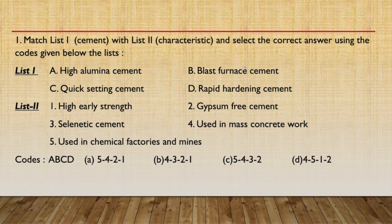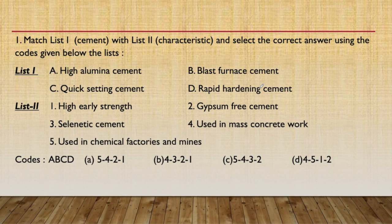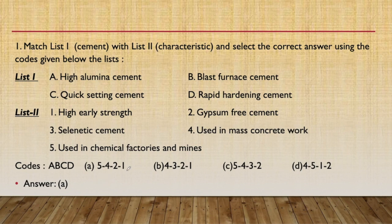Blast furnace slag cement has less C3S and more C2S, making it suitable for mass concrete work. Quick setting cement should have a least percentage of retarder — it should be gypsum free because gypsum is a retarder. Rapid hardening cement is used for high early strength because C3S content is more and C2S content is less. The three-day strength of rapid hardening cement equals the seven-day strength of ordinary Portland cement. The correct sequence is option A: 5421.